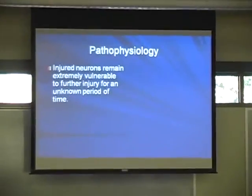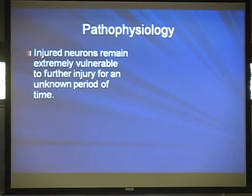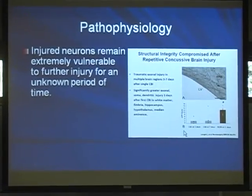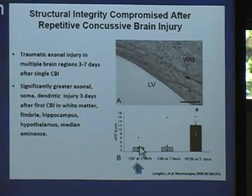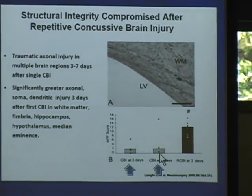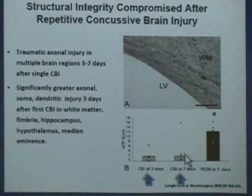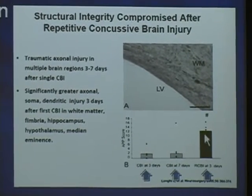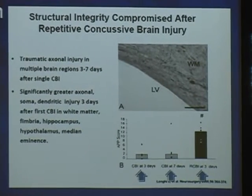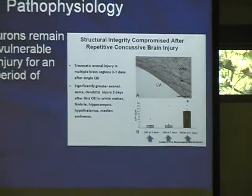Although the main components of concussion are functional, there is also a structural component. In animal models, three days after a head injury there's a small but definite amount of nerve cell damage. If you monitor over about seven days, it stays roughly the same. But if you give that same animal a second injury during that three-to-seven-day window, there's a dramatic increase in damaged nerve cells. This means when you haven't recovered from the first injury and sustain another, you're far more susceptible to a much worse injury — a major reason to be very careful about returning someone to play before they're better.